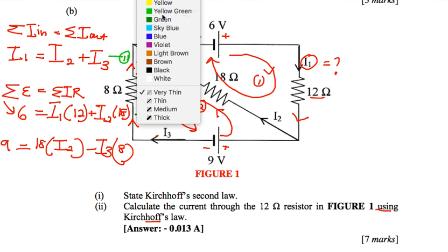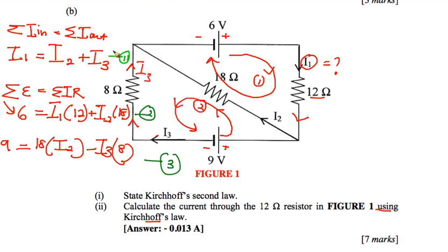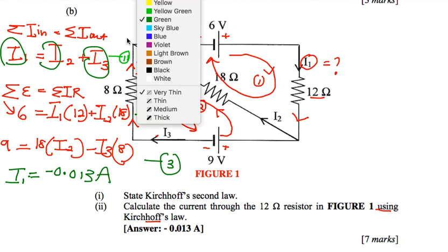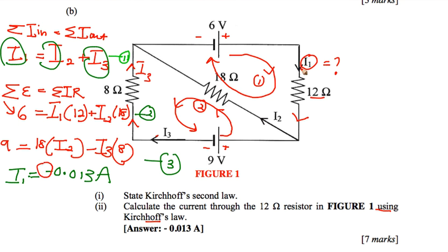Now you have three equations with three unknowns — I1, I2, and I3. Using the mathematical process to solve these equations, I1 is equal to negative 0.013 amperes. The negative sign does not mean the value is negative; it means the assumed direction of I1 was incorrect. The actual direction of I1 is upward. That's all, thank you.